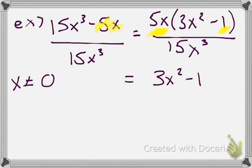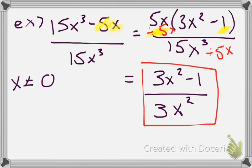If I look at my 5x and my 15x cubed, I say 5 over 15 can be reduced to 1 over 3. And x over x cubed can be reduced to x squared. The thing that I'm actually dividing out is I'm dividing by 5x on the top and the bottom. 5x is my GCF. And then that gives us our answer of 3x squared minus 1 over 3x squared.